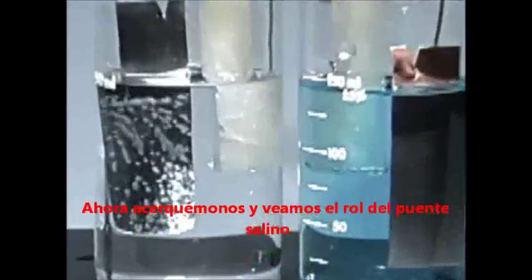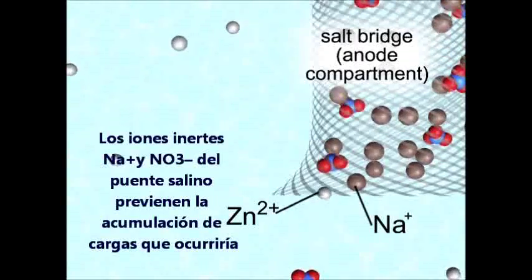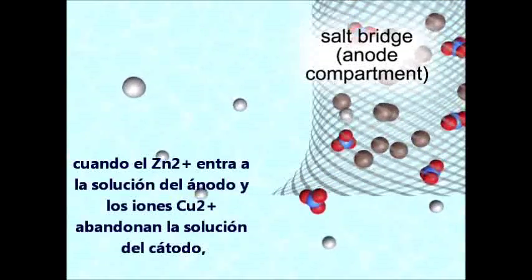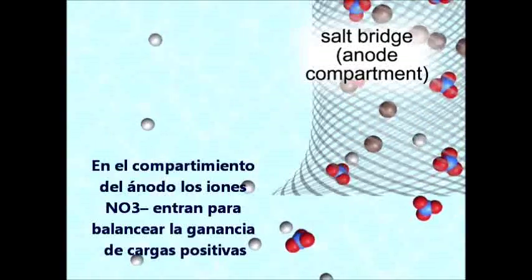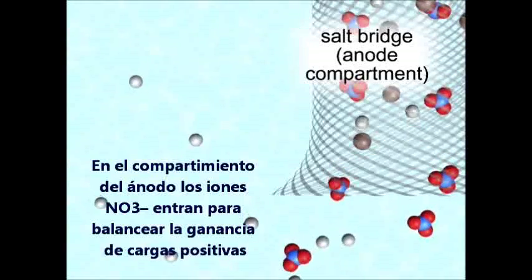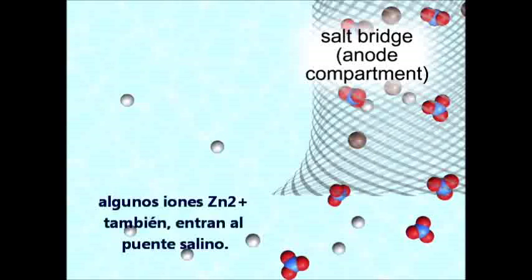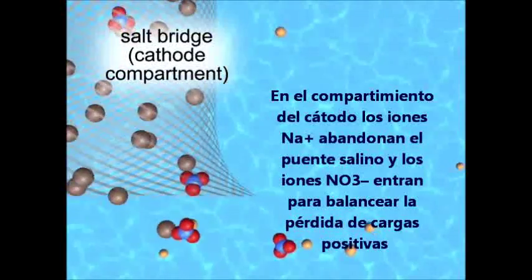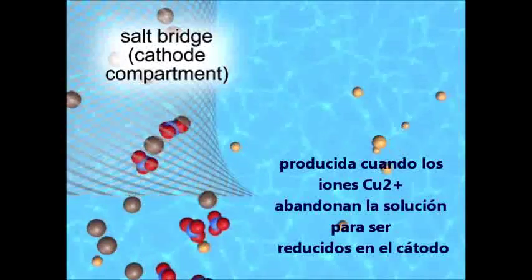Let's close in to see the role of the salt bridge. The non-reactive sodium and nitrate ions of the salt bridge prevent the buildup of charge that would occur as zinc ions enter the anode solution and copper 2+ ions leave the cathode solution. Such a charge buildup would halt cell operation. In the anode compartment, nitrate ions leave the salt bridge to balance the gain of positive charge as zinc ions enter the solution. Some zinc ions also enter the salt bridge. In the cathode compartment, sodium ions leave the salt bridge and nitrate ions enter it to balance the loss of positive charge as copper 2+ ions leave the solution and are reduced at the cathode.